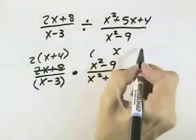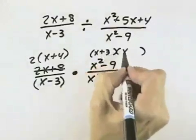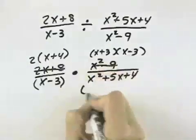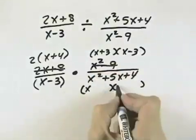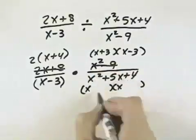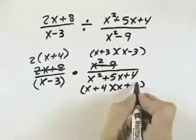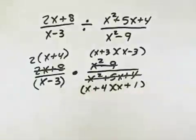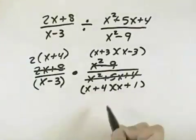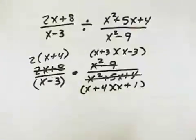x squared minus 9 is the difference of squares, so we take the sum and difference of the square roots. And finally, for this trinomial, the first terms will be x. Both signs will be the same — they'll both be positive. 4 and 1 will give us 5 for our middle term, so 4x and 1x is 5x. We've got the correct factored forms for each of these numerators and denominators.